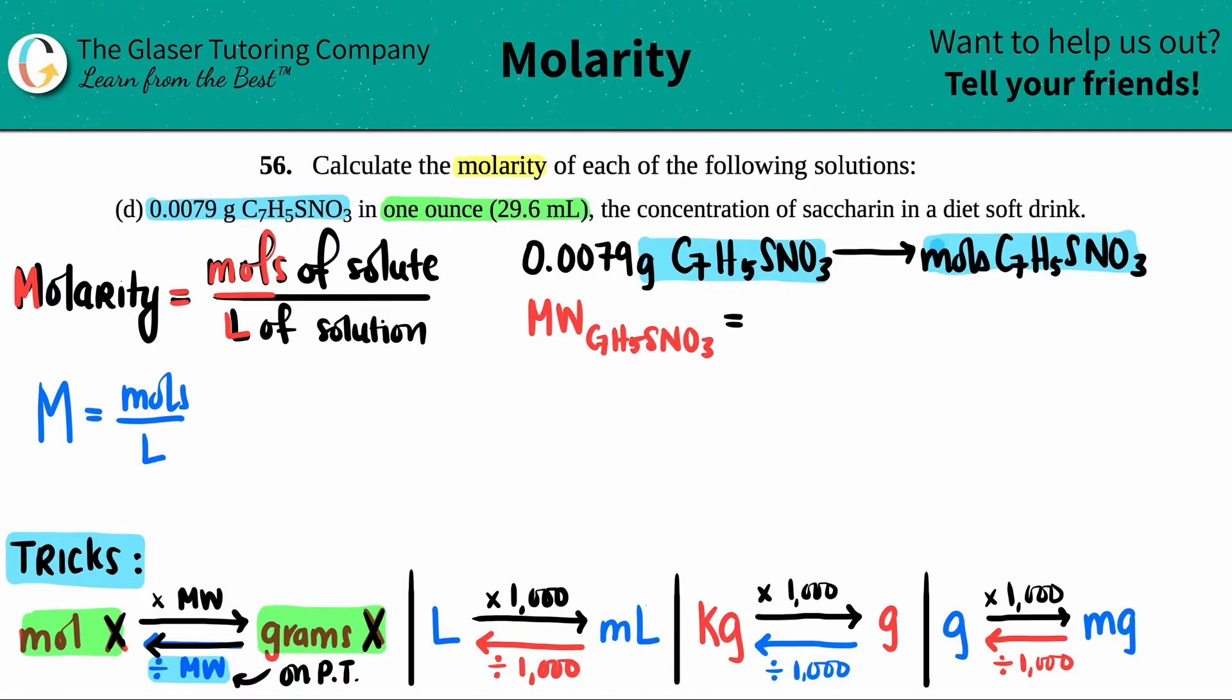We have seven carbons, each one is roughly 12. Five hydrogens, each is roughly one. Sulfur - there's only one of those. Nitrogen - there's only one of those. And finally oxygen, there's three of those, so three times 16. I get roughly 183.18, and the units for a molecular weight or molar mass is grams per mole.